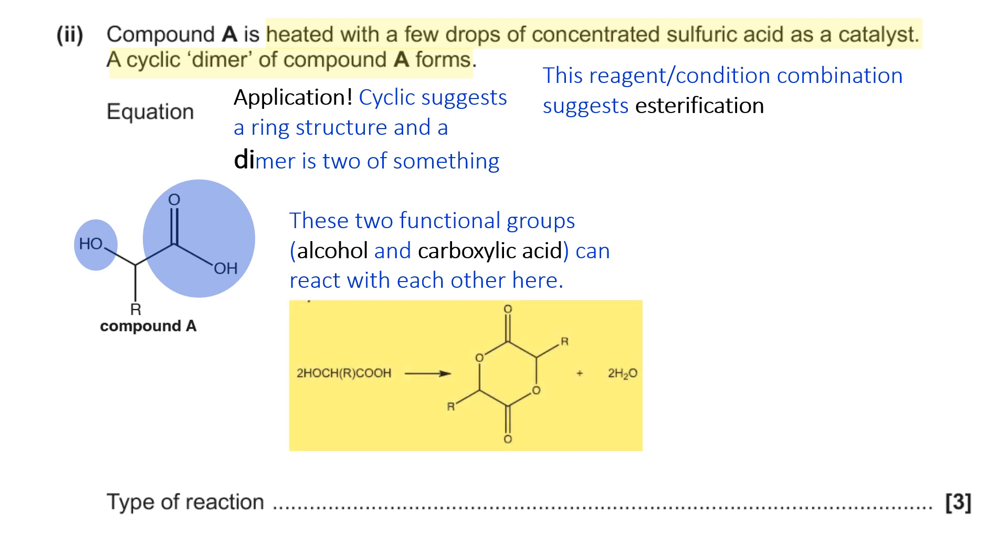But if you think about cyclic, it means it's a ring structure, doesn't it? And di in dimer must mean that there's two or something. So if we take, for example, two moles of compound A, you can actually react the carboxylic acid of one with the alcohol of the other twice. And therefore, you can get a ring structure like this shows from the mark scheme. So obviously, it's an esterification reaction. But also, because you've got water being removed, you could argue that it's condensation as well.